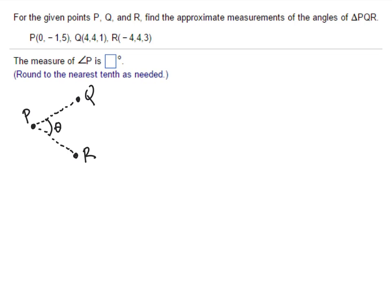Now, what we're going to do is we're going to use the dot product. The dot product of the vector from P to Q, which we call PQ with a little arrow on top, and the vector from P to R, which we'll call PR with a little vector on top, so PQ dot PR is the magnitude of PQ times the magnitude of PR times the cosine of that angle theta that we're looking for.